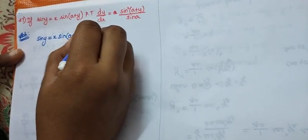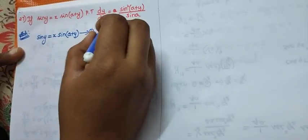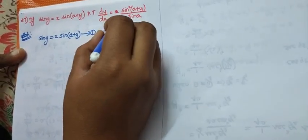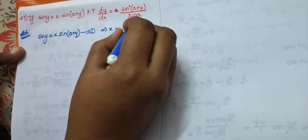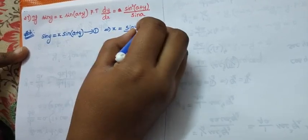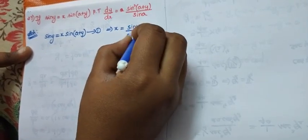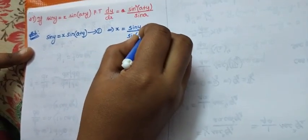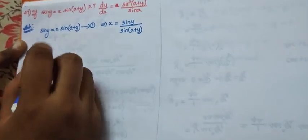We can call this the first equation. From here, what is our x? x equals sin y divided by sin(a+y). We can keep this aside because we are going to use it later.